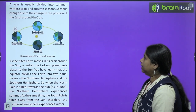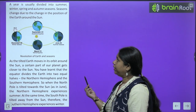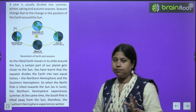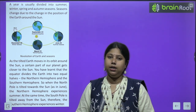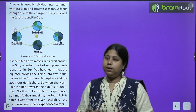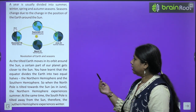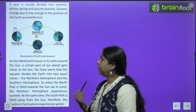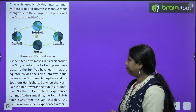The year is usually divided into summers, winter, spring and autumn. 4 seasons hum mainly follow karte hain saal mein — summer, summer ke baad aata hai autumn, autumn ke baad aayega winter, aur winter ke baad aata hai spring.